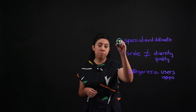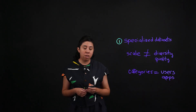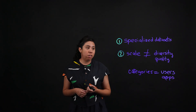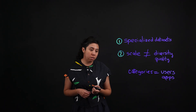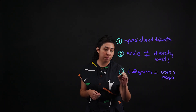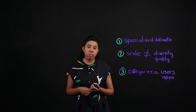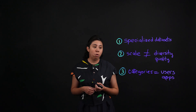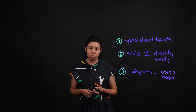So, as large language models evolve, so does the work of building and maintaining their datasets. Here are a couple of things to keep in mind. First, specialized datasets are key. Second, scale doesn't guarantee diversity or quality. And third, dataset categories need to take into consideration the needs and the conditions of users and intended applications where datasets are going to be used.